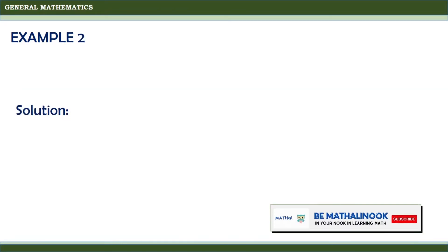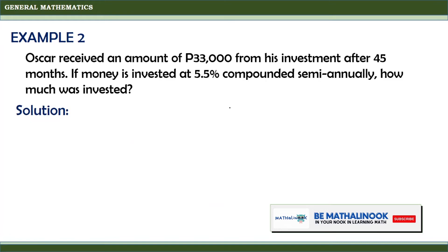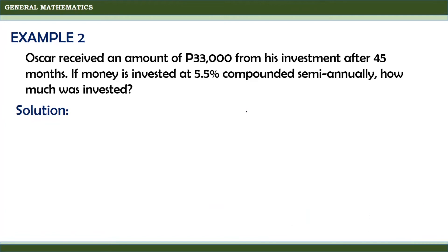Let us have another example. Oscar received an amount of 33,000 pesos from his investment after 45 months. If the money was invested at 5.5% compounded semi-annually, how much was invested? Since we are asked how much was invested, we need to solve for the present value or the principal. The future value F is equal to 33,000.